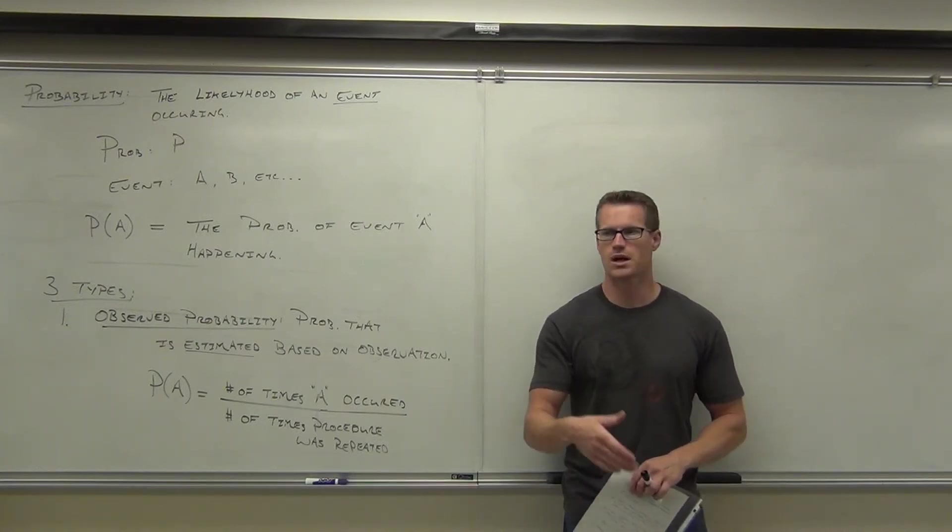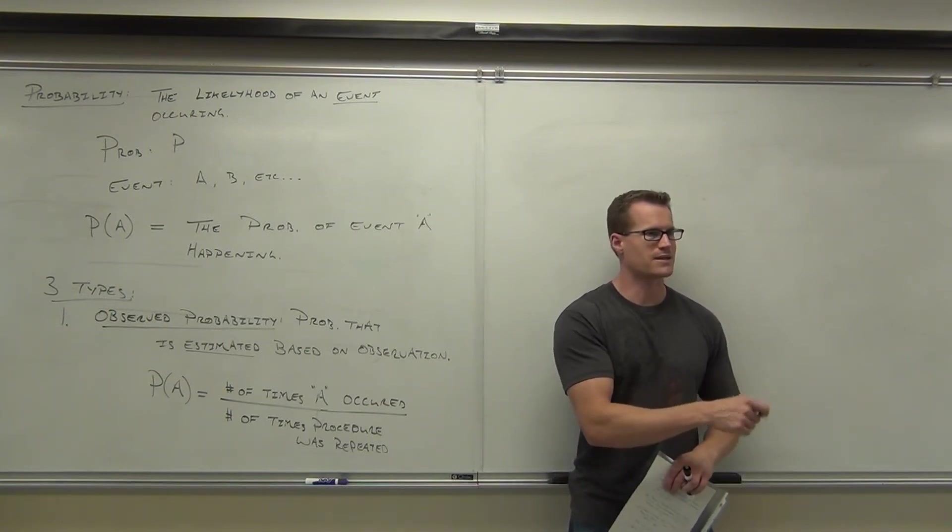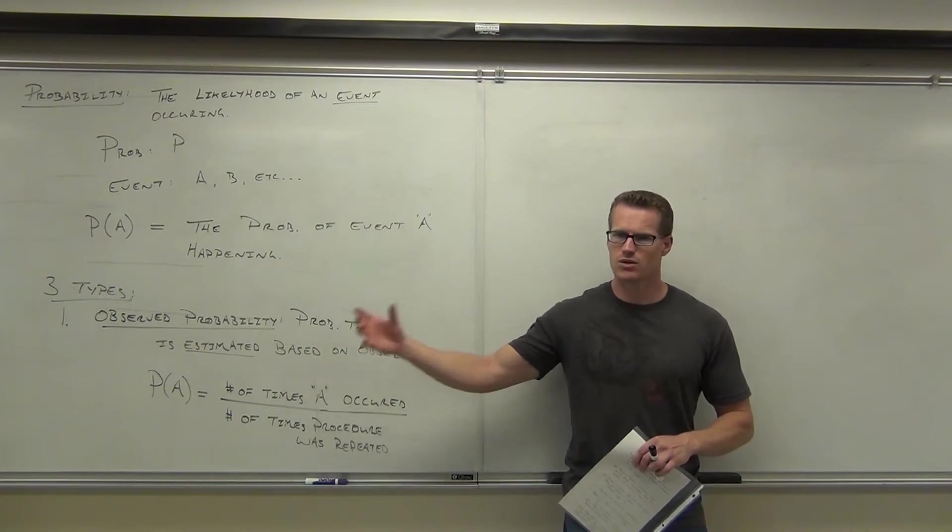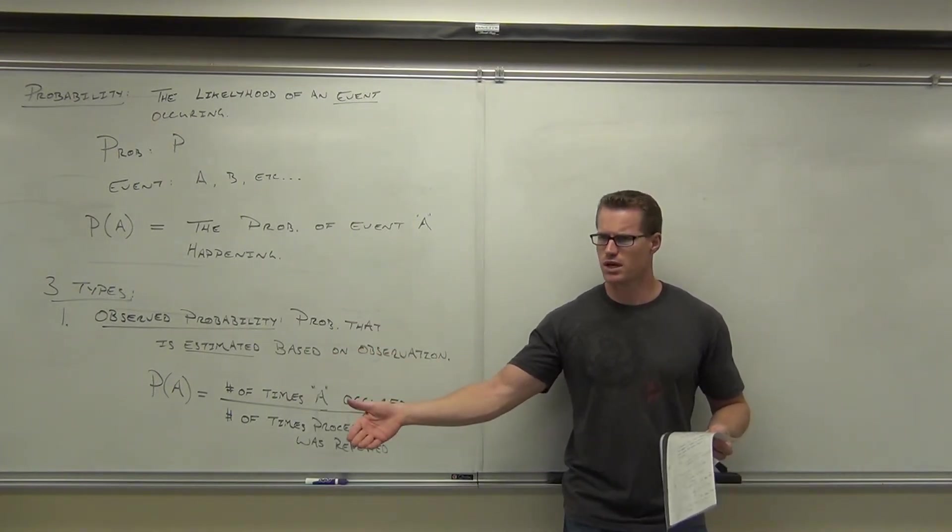Eight times out of 24 times you hit the ball, that's 33% or 0.333. That's how they're calculating that. That would be an observed probability, because later on they're going to say you usually hit the ball 8 times out of every 24 times, right?